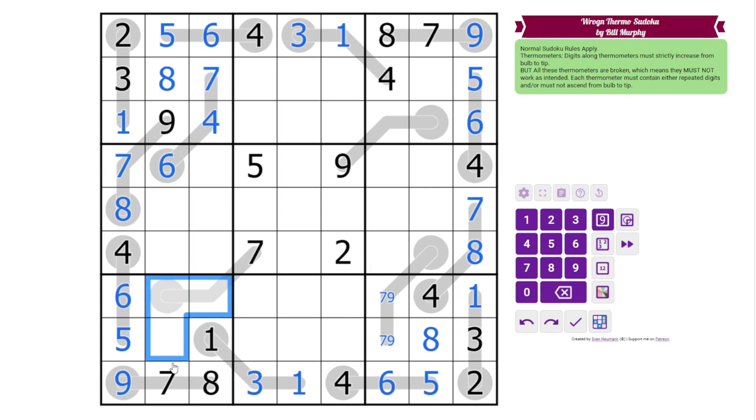These are 2, 3, and 4. We have a 4 there, so these are 2 and 3. We can't have 2, 3, 7, that would be a valid thermo. So this is 3 and 2. These are 1 and 2. We know the order from that 2. These are 3, 5, 9. That's the 3 from the 5 and 9 there.